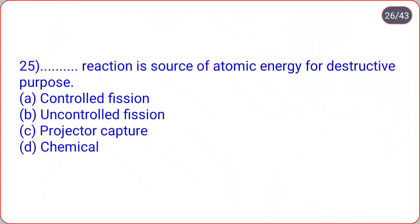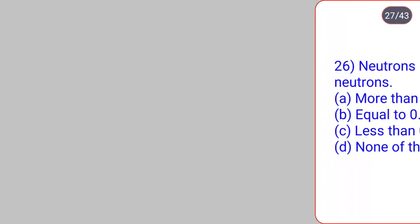Which of the following acts as a control rod in a nuclear reactor? Options are thorium, calcium, cadmium, platinum. So correct option is cadmium; cadmium is used as a control rod. For destructive purpose, dot-dot reaction is source of atomic energy. Options are controlled fission, uncontrolled fission, projectile capture, chemical. For destructive purpose, uncontrolled fission reactions are used. For peaceful purpose, controlled fission; for destructive purpose, uncontrolled fission reactions are source of atomic energy.